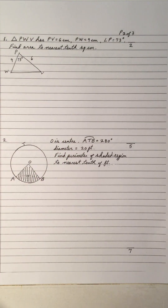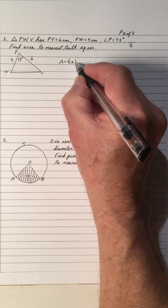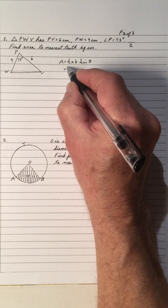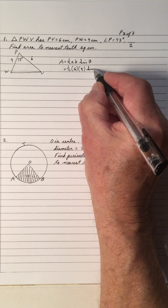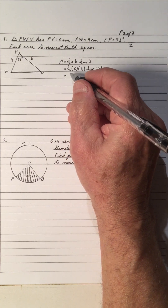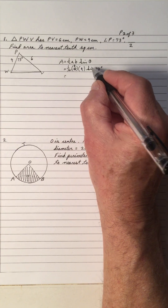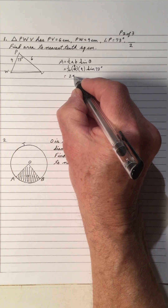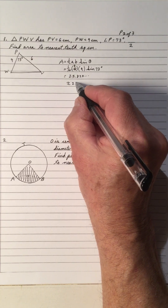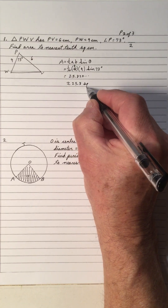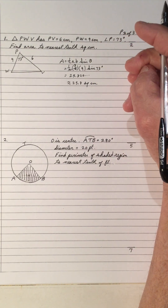We want to find the area. The area of a triangle with two sides and an included angle is one half of A times B times sine of the included angle. So that's one half of 6 times 9 times sine of 73°. Taking half of 6 gives 3, so that's 27 times sine of 73°, which gives 25.820, approximately 25.8 square centimeters. The questions are done in order of the videos.